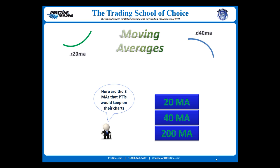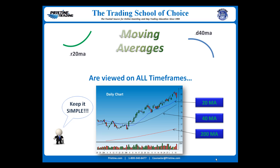While there are a multitude of possible moving averages you could use, for our purposes we only use three moving averages. They are the 20, 40, and the 200. Some traders may choose a smaller moving average on a fast moving chart. These moving averages can be viewed on all time frames, from a one-minute chart to a monthly chart.